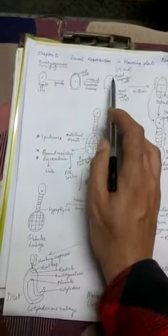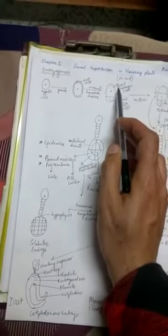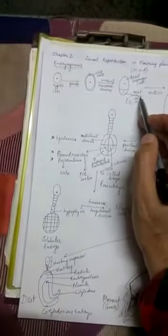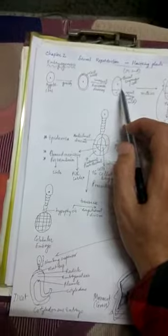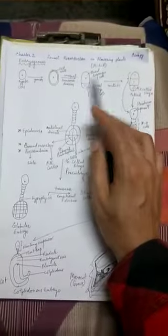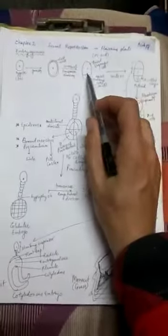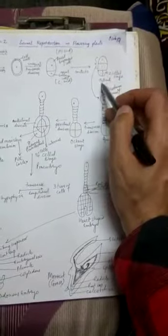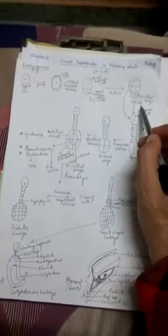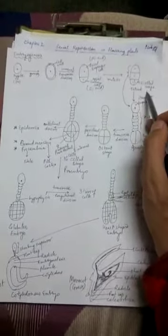This unequal transverse division produces two cells: the micropylar end cell is referred to as the basal suspensor cell, and the chalazal end cell is called the apical embryo cell. The basal cell develops into a suspensor and the apical cell develops into the embryo. These two cells each undergo one mitotic division — the suspensor cell divides transversely, the embryo cell divides vertically — giving four cells total, called the tetrad, though the embryo itself is at the two-cell stage.